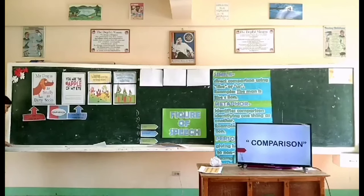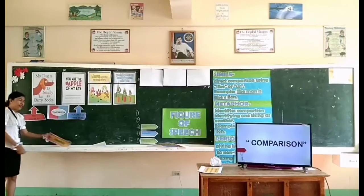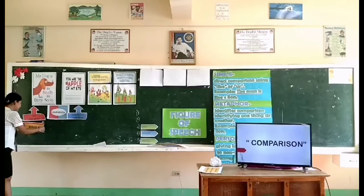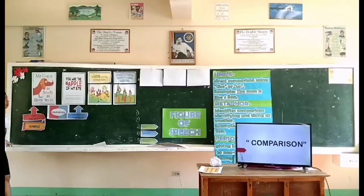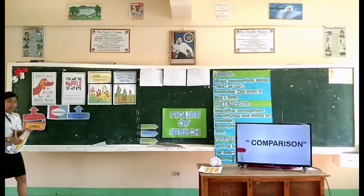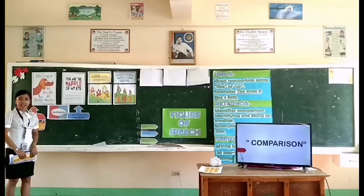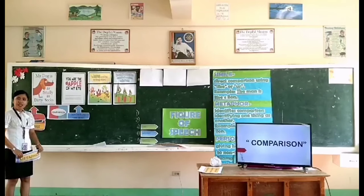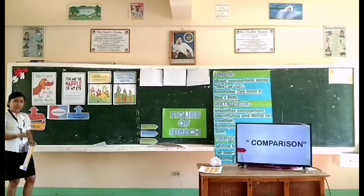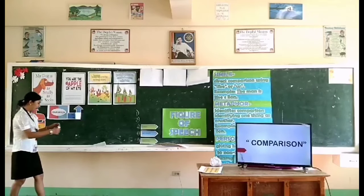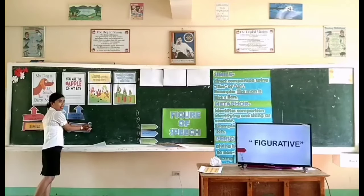In a sentence, if we use like or as, it is called what? Very good — it is called a simile. How about a direct comparison without the use of like or as? Very good, Lila — it is a metaphor.